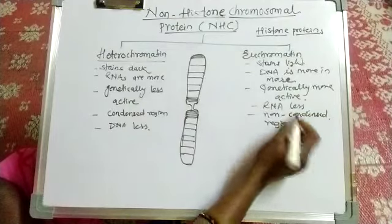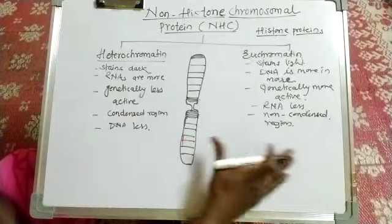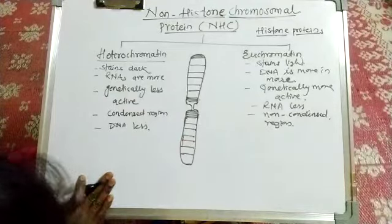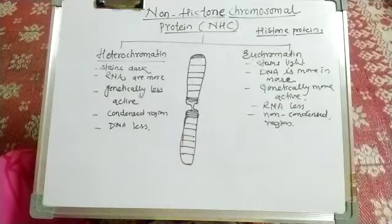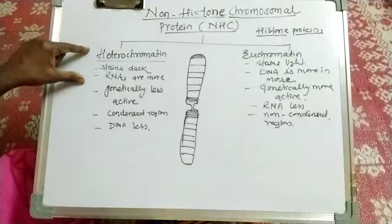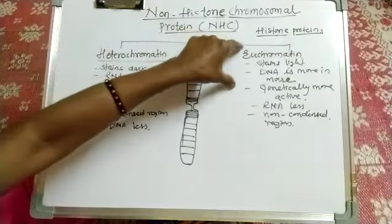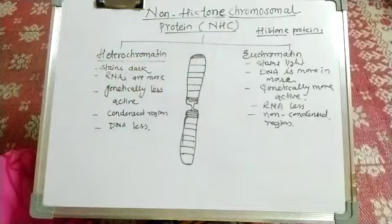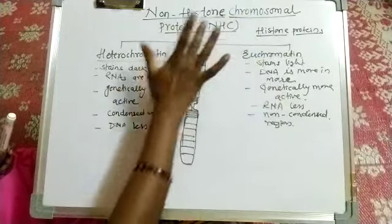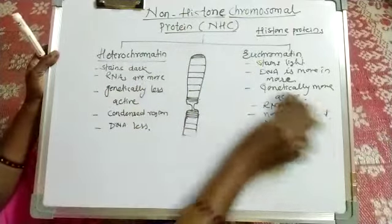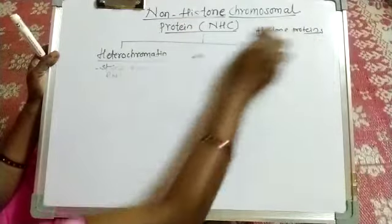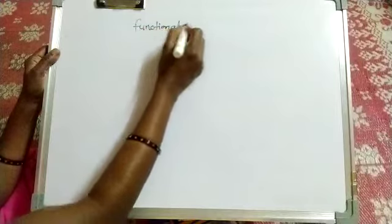So we can differentiate between euchromatic and heterochromatic regions. This is about non-histone chromosome protein and the heterochromatic and euchromatic regions, and it is having two functional roles.